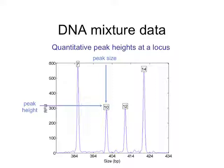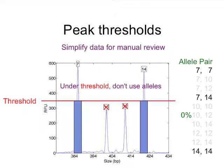So you can imagine if you had a mixture of two people: maybe there's a lot of 7 and 14 from one person, and less of the 10 and 12 from a second person. And there are methods that people can apply to interpret. All DNA methods are roughly the same in that you gather the data, and then you infer — or should be inferring — genotypes from the data and then making a comparison.